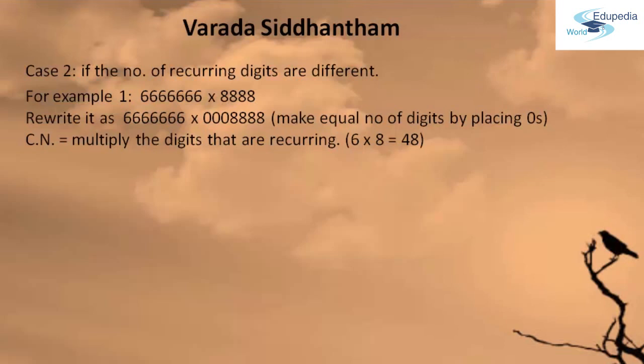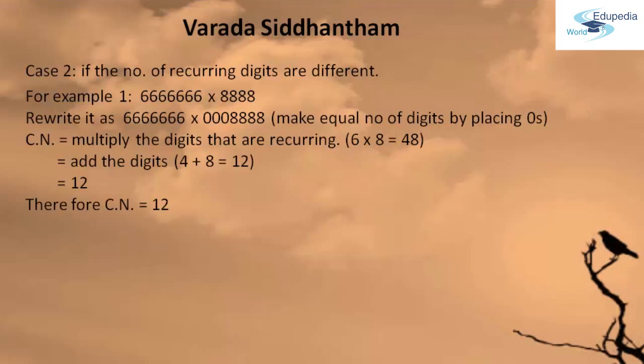48 is a two-digit number, so what you are going to do is add up the digits. So 4 plus 8, you will get 12. Now the CN that we have got here is 12.